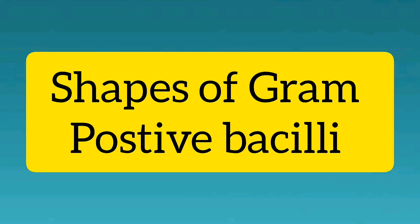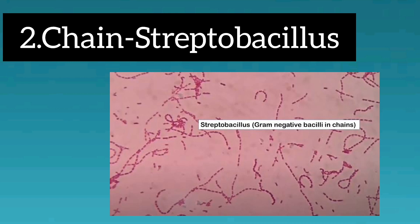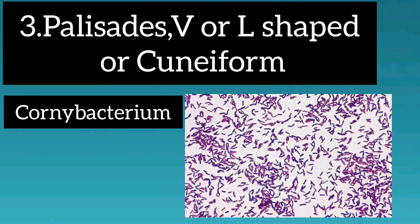Shapes of Gram positive bacilli. Bacillus anthracis looks like bamboo stick appearance. Streptobacillus is also like chain appearance. Corynebacterium looks like palisades, V or L shaped, or cuneiform in shape.